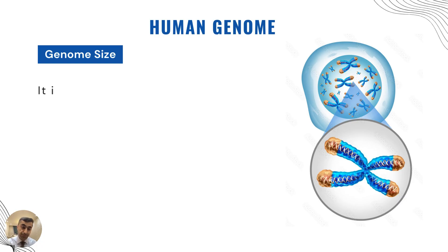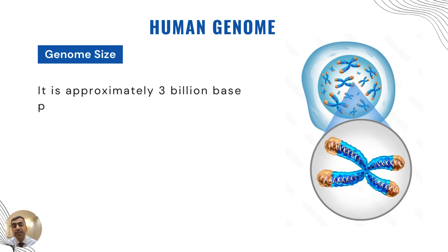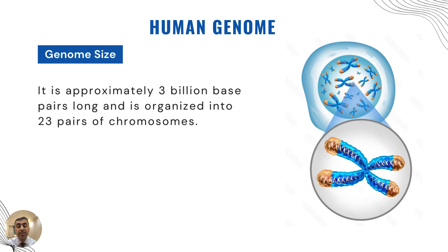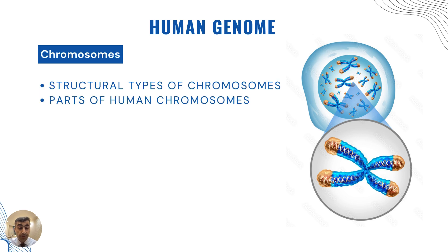The genome size is approximately three billion base pairs long, and it is organized into 23 pairs of chromosomes, which are located within the nucleus of the human cell.